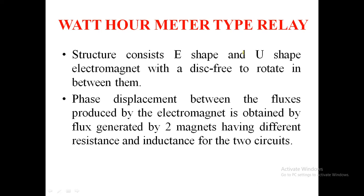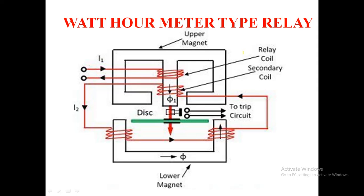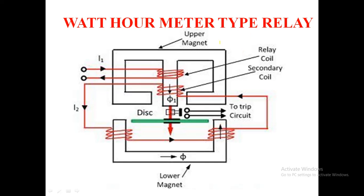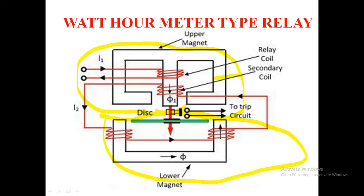Next, coming to the watt-meter relay. The main feature is that its operation can be controlled by opening and closing the secondary winding circuit. If the secondary winding is opened, no torque will be developed. The main structure consists of an E-shape and a U-shape electromagnet with a disk free to rotate in between. The E-shape forms the upper magnet and the U-shape forms the lower magnet.